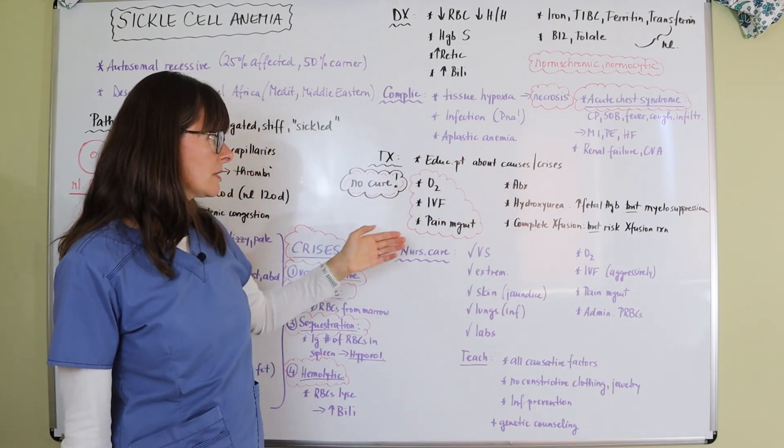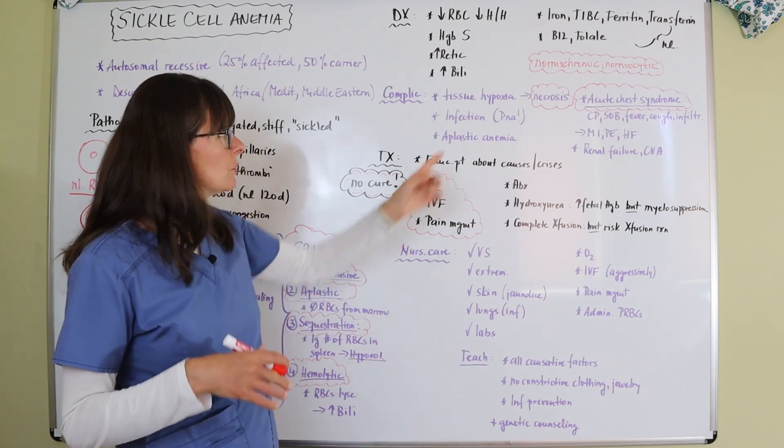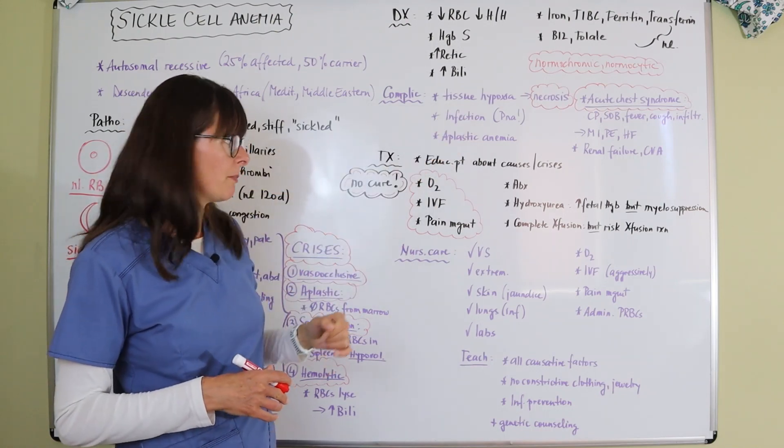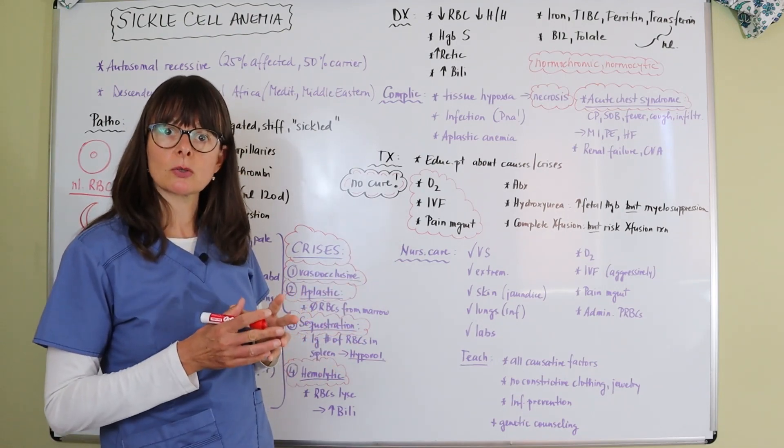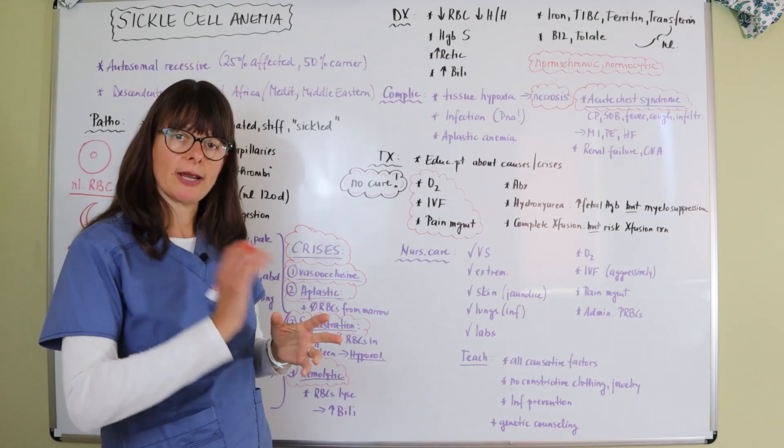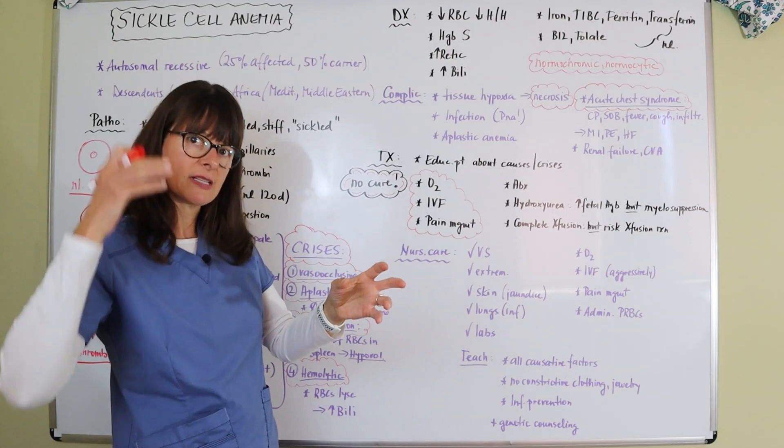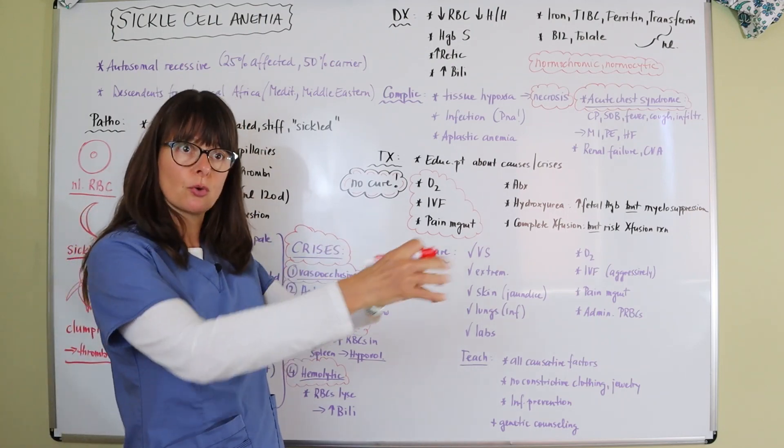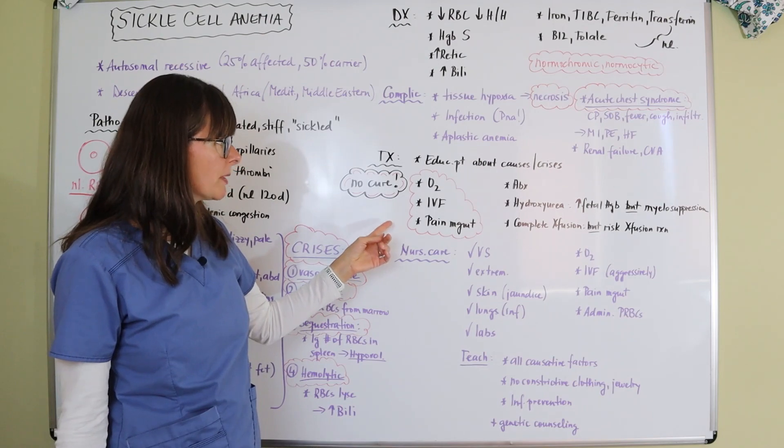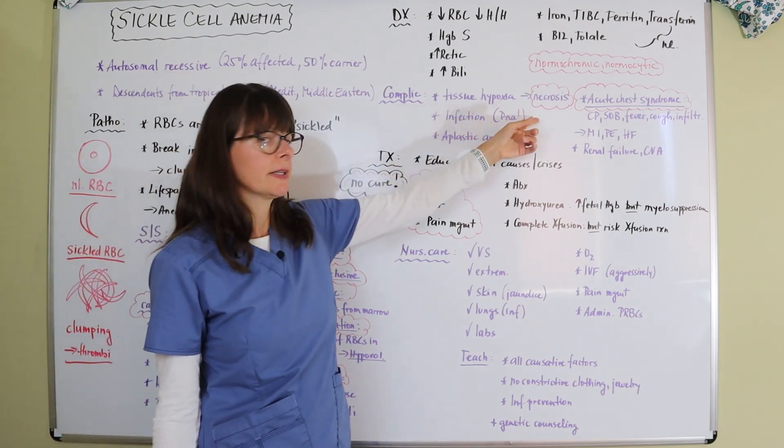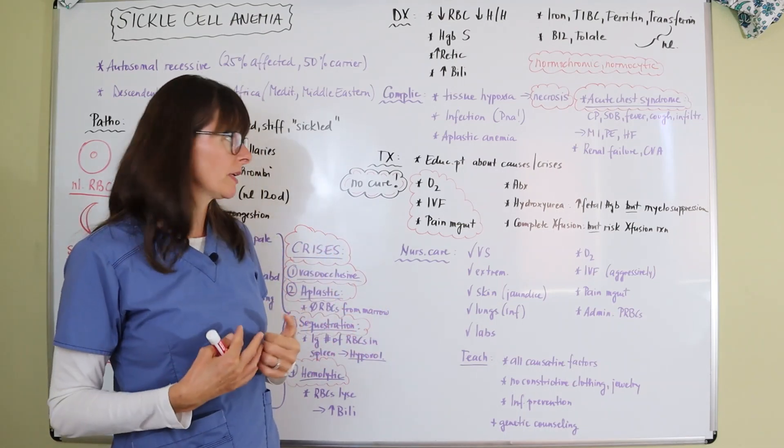The treatment requires these three things: oxygen to help with a low oxygen carrying capacity and perfuse these tissues that are being hypoxic; IV fluids, and those are going to be isotonic IV fluids to hydrate the patient to try and get these clumps of cells dissolved as that fluid flushes through and hopefully dissolves these thrombi; and then pain management, because anything that causes hypoxia and necrosis is going to be painful, no matter what body part that is.